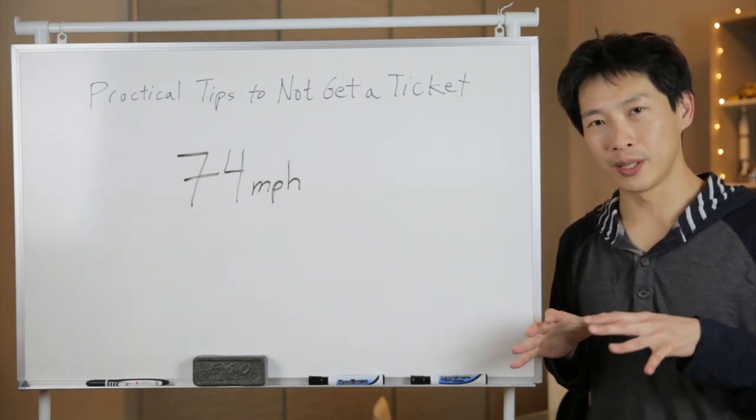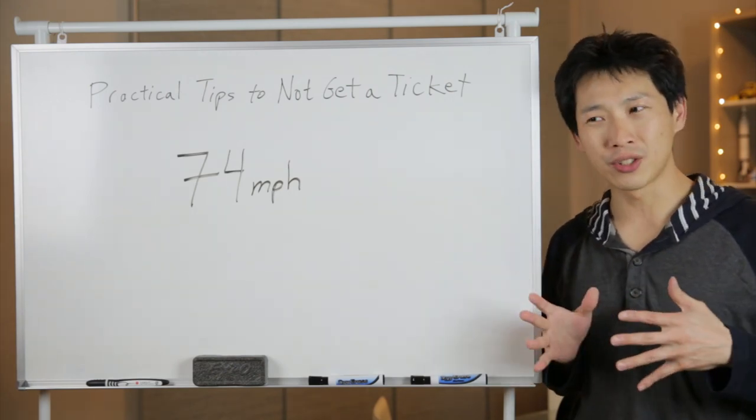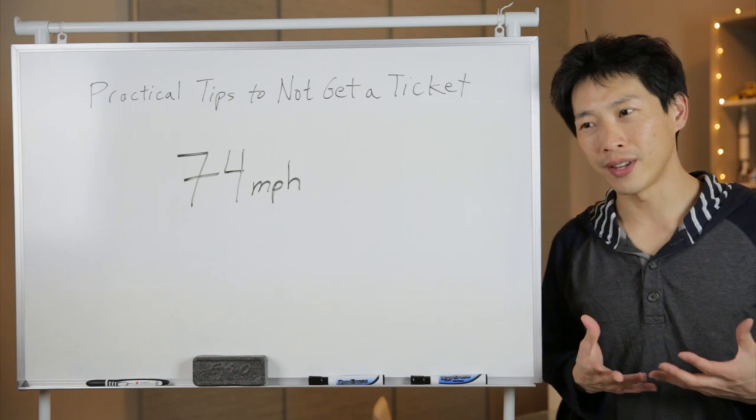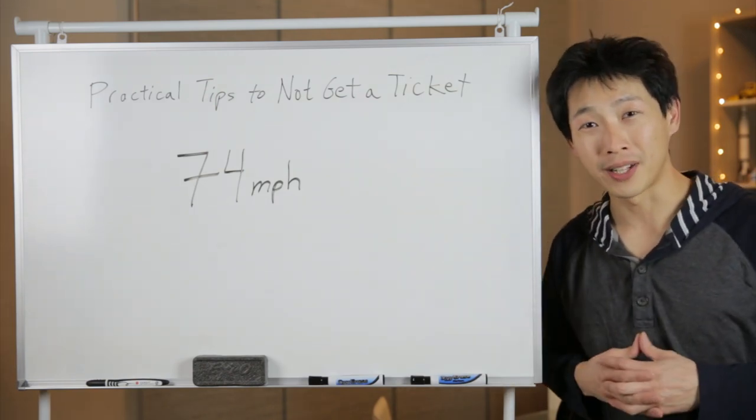But some counties, they're really, really strict. If you go one mile over, then they would catch you. So it's kind of good to know which area you're driving in and if they're prone to catching people that's just one mile an hour over.